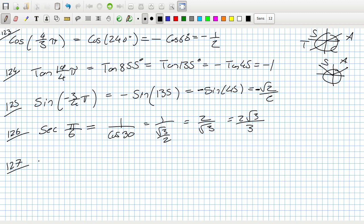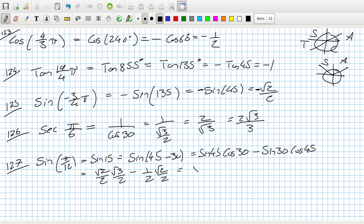127. Sin π/12. So that is sin 15, which is sin 45 - 30, which is sin A cos B - sin B cos A. So that's √2/2, and then cos 30 is √3/2 minus a half and then √2/2. So that works out to be √6 - √2 over 4.